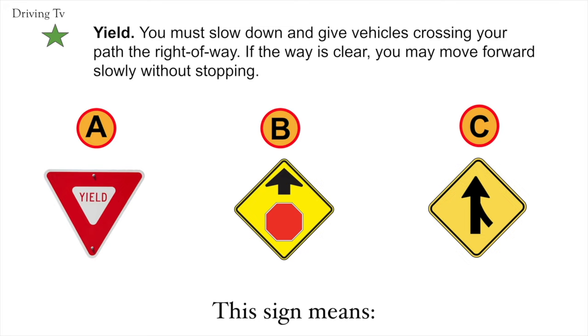Yield. You must slow down and give vehicles crossing your path the right of way. If the way is clear, you may move forward slowly without stopping. The correct answer is A. Yield.